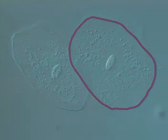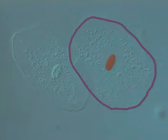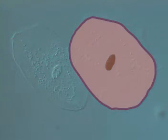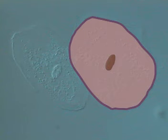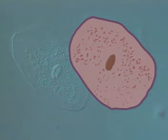All animal cells have a cell membrane — a thin outer skin. The tiny dense blob is the nucleus, the control centre of the cell. The cytoplasm is a jelly-like substance filling the cell, and it's where all the chemical reactions happen.